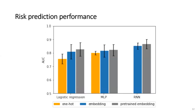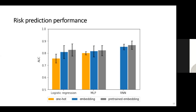We measured the prediction performance of the RNN model and baselines using 5-fold cross-validation AUC. Logistic regression and multi-layer perceptrons are used as baselines under three conditions: without embedding, with randomly initialized embedding, and with pre-trained embedding. The RNN model was implemented with two conditions — randomly initialized embedding and pre-trained embedding — since training without an embedding layer is infeasible due to data high dimensionality. The RNN model outperformed all baselines, achieving the best AUC of 0.86 with pre-trained embedding, comparable to existing models showing AUC between 0.7 and 0.9.